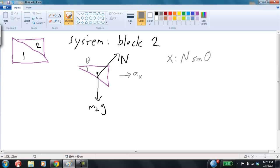And so we have, in the x direction, N sine theta, and then we have mg, m2g, but that's going straight down, and this is equal to m2a.